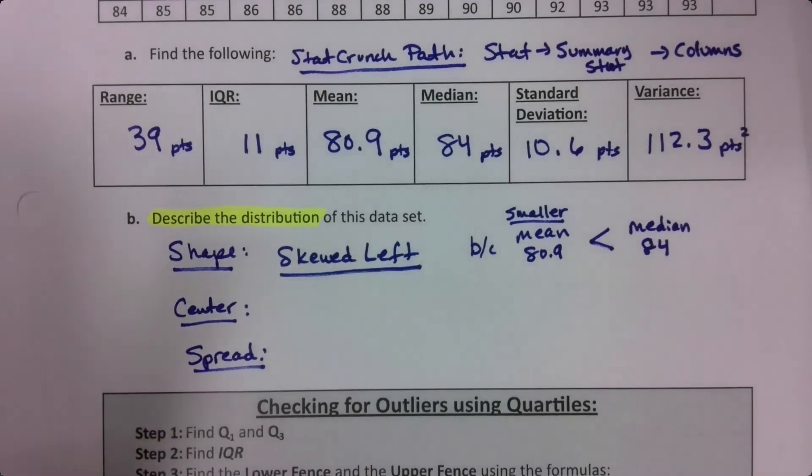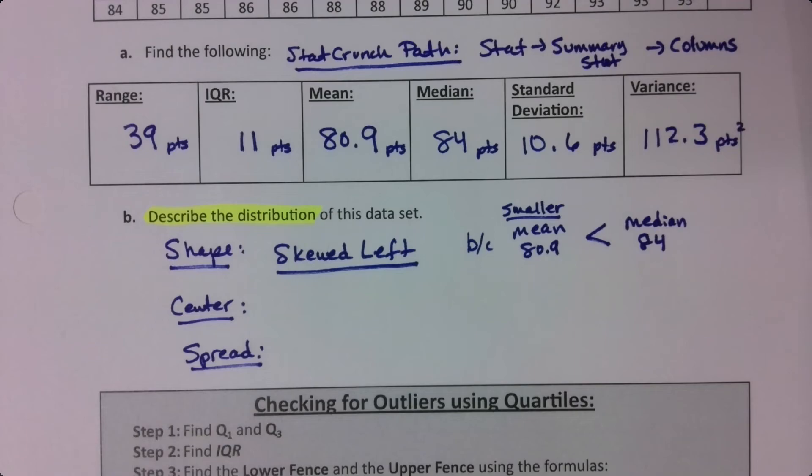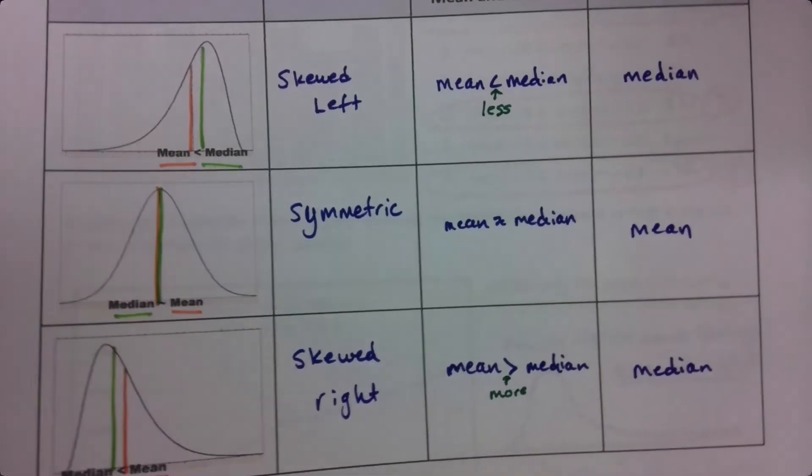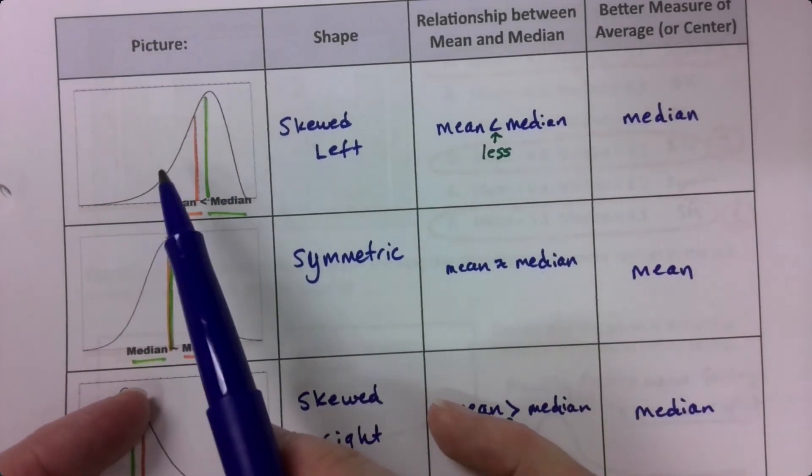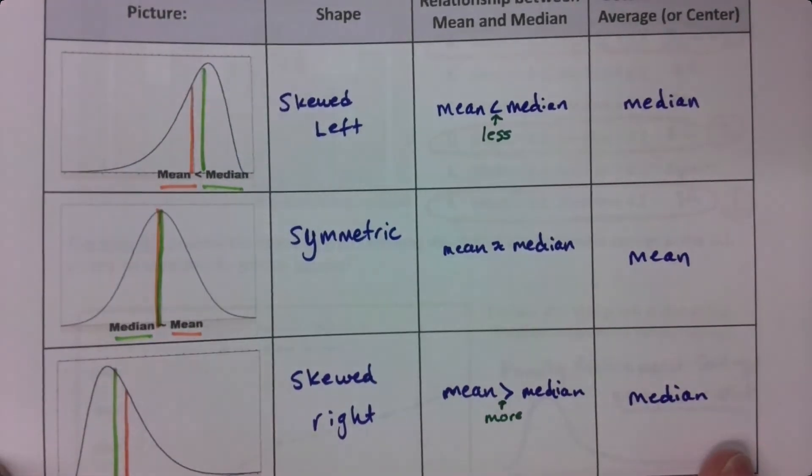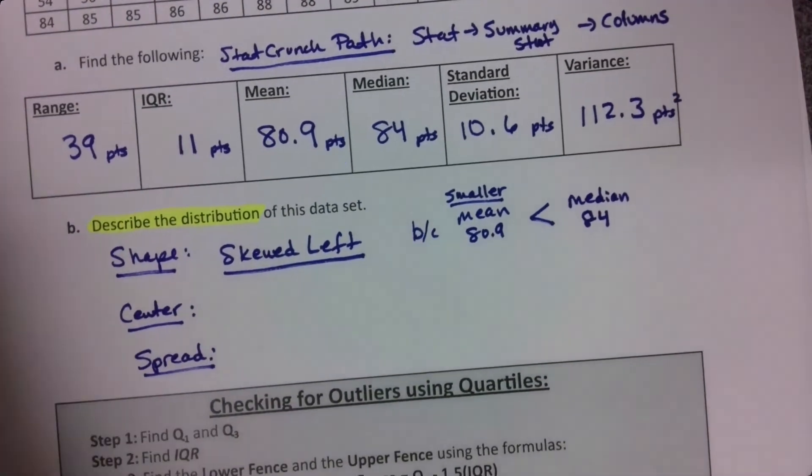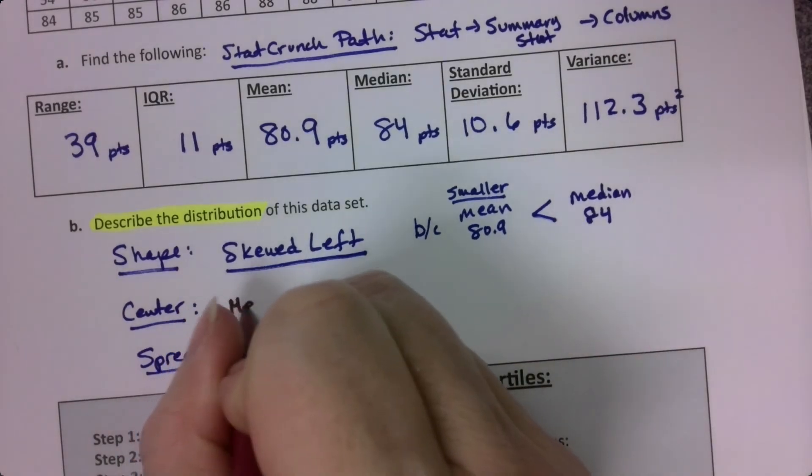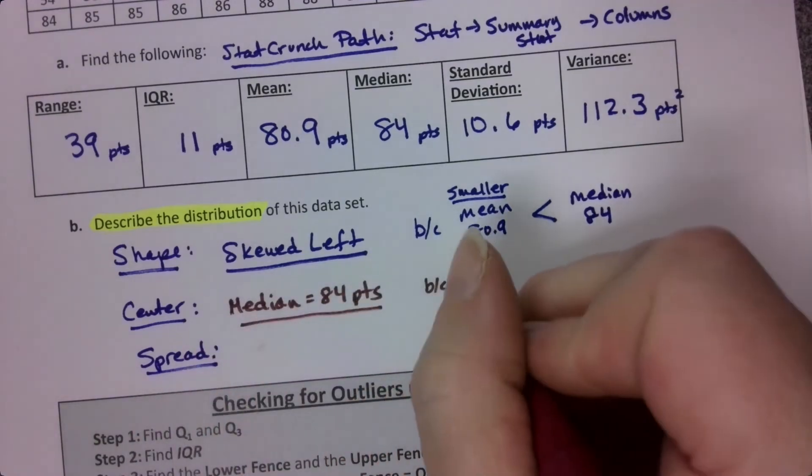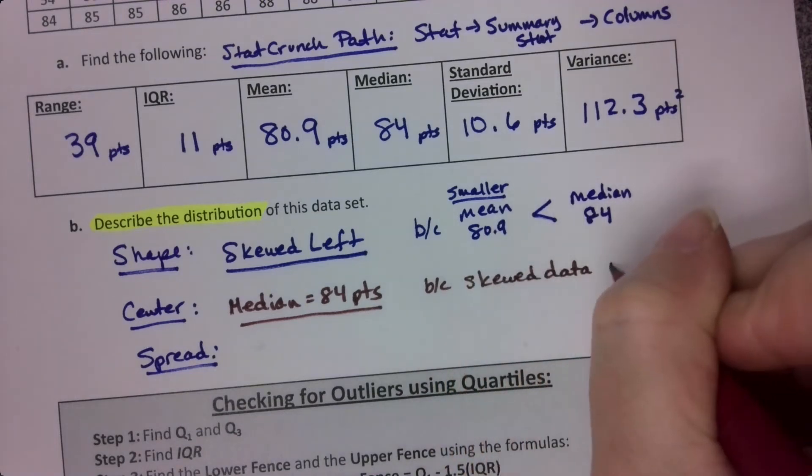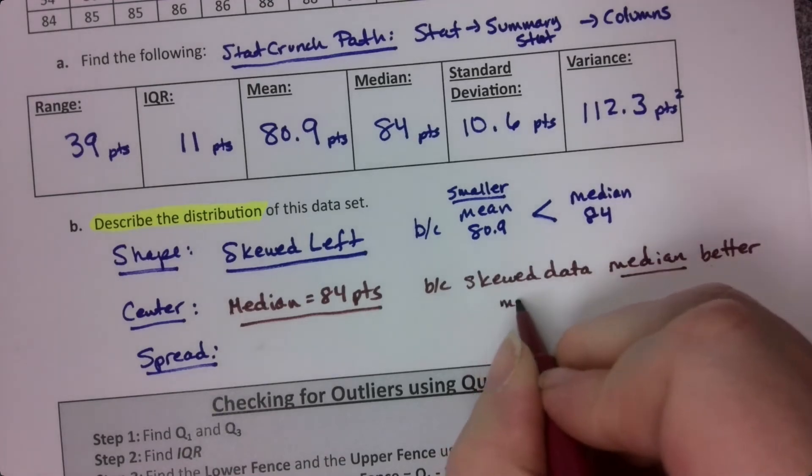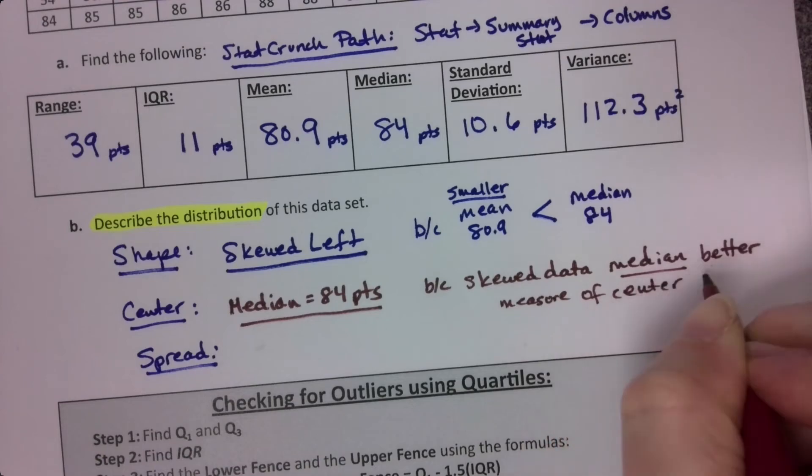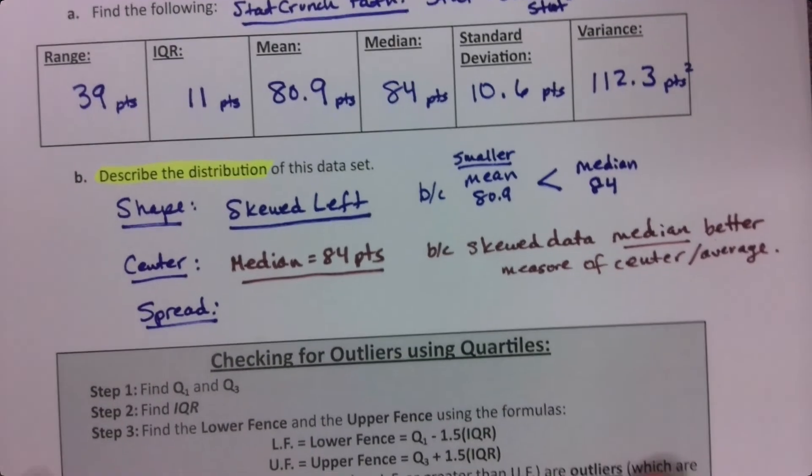Now the center. Well, if it's skewed left, we learned way back in section 3.1 that when it's skewed left, when your data is skewed, you want to use the median. The median is the better measure because it resists that tail. We have a tail going off here to the left. This is from section 3.1. So we want the median. So that's what we're going to say. The median is 84 points. Because for skewed data, the median is the better measure of center. We learned that back in section 3.1. And measure of center just means average, where's the middle?